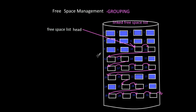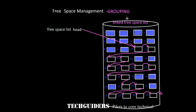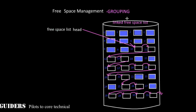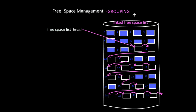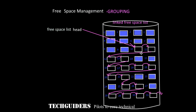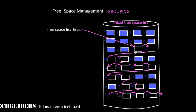The next method of free space management is grouping. It can be considered as a modification of the linked free space list implementation to a linked index method of implementation. In the linked free space method, each block keeps exactly one address to one free block. Thus with one disk block access we get only the address of one free block. In grouping, we modify it such that each block keeps a group of addresses, or n number of addresses, at a time.